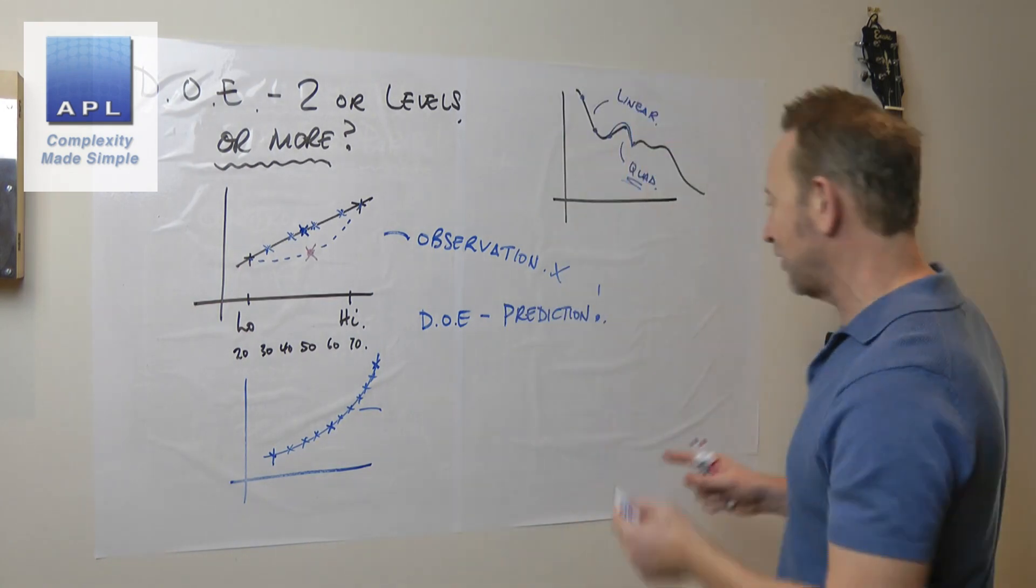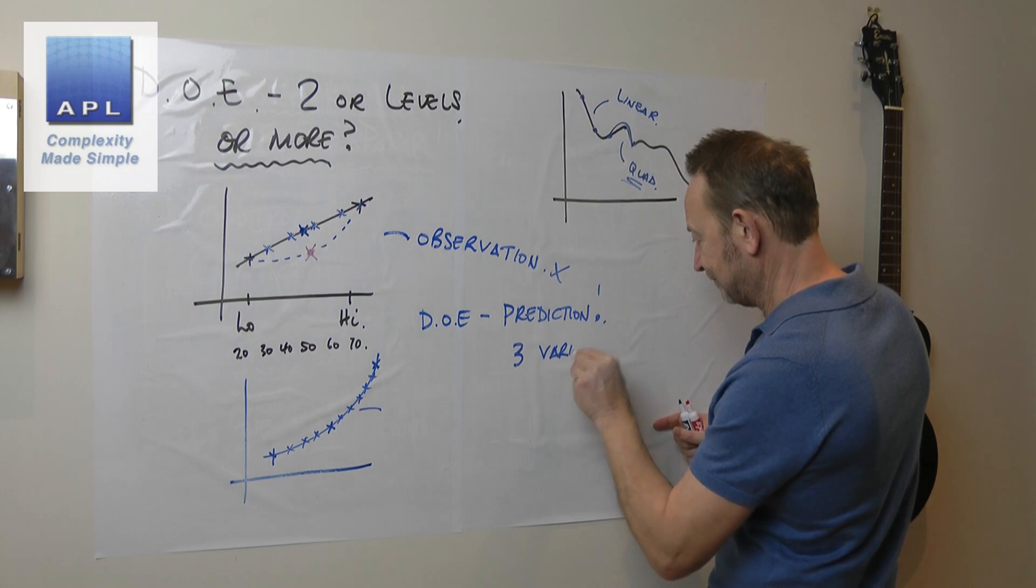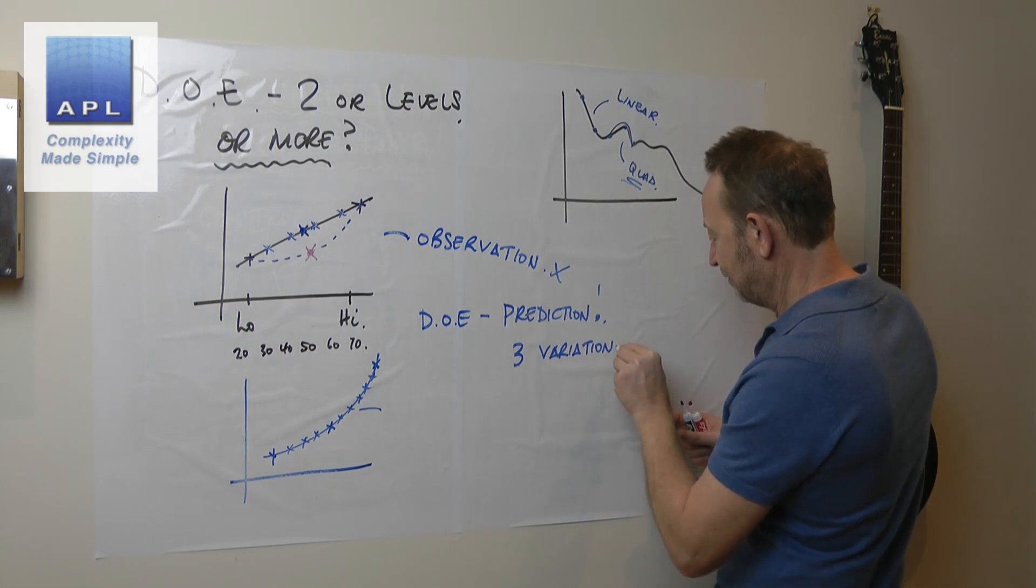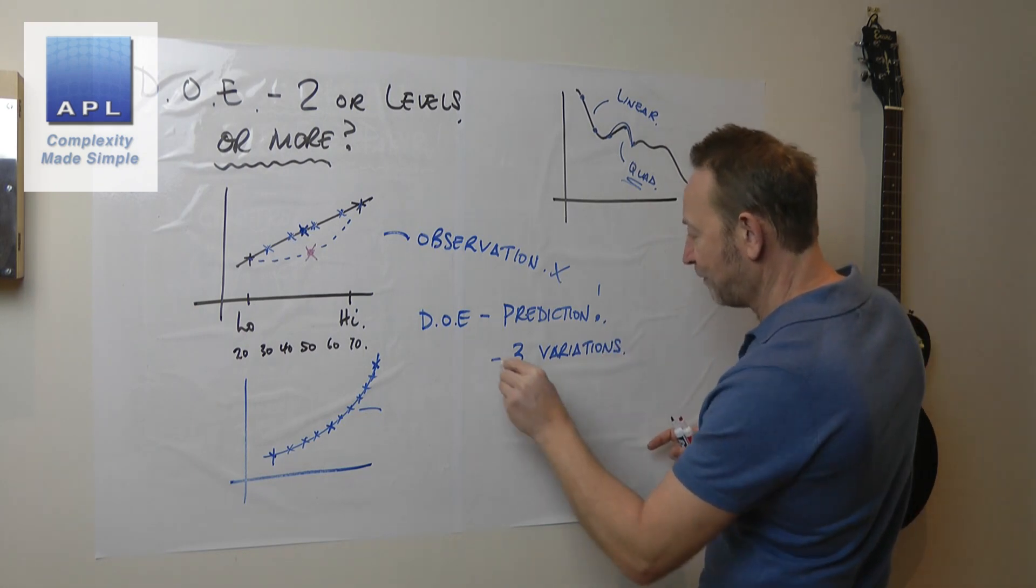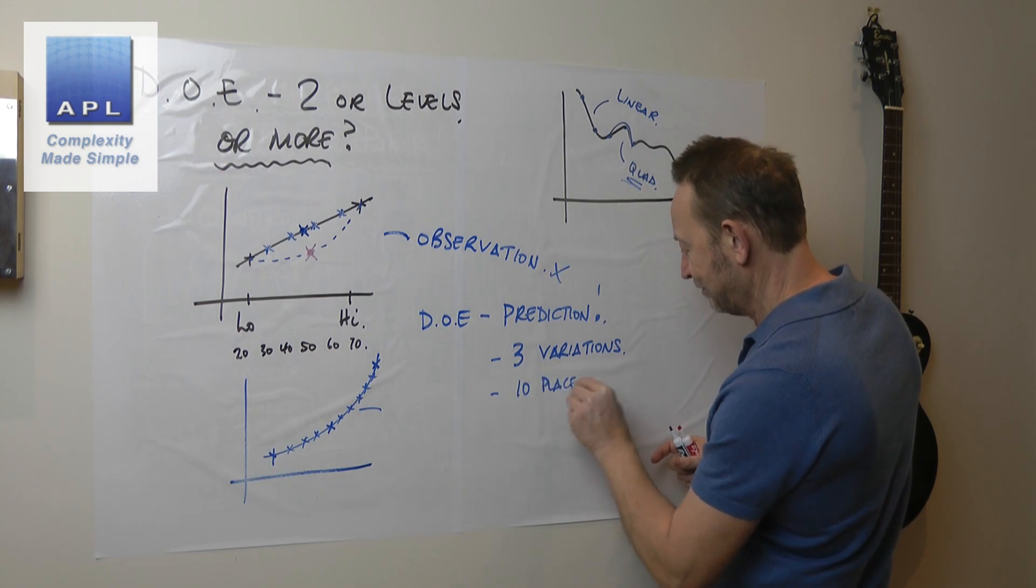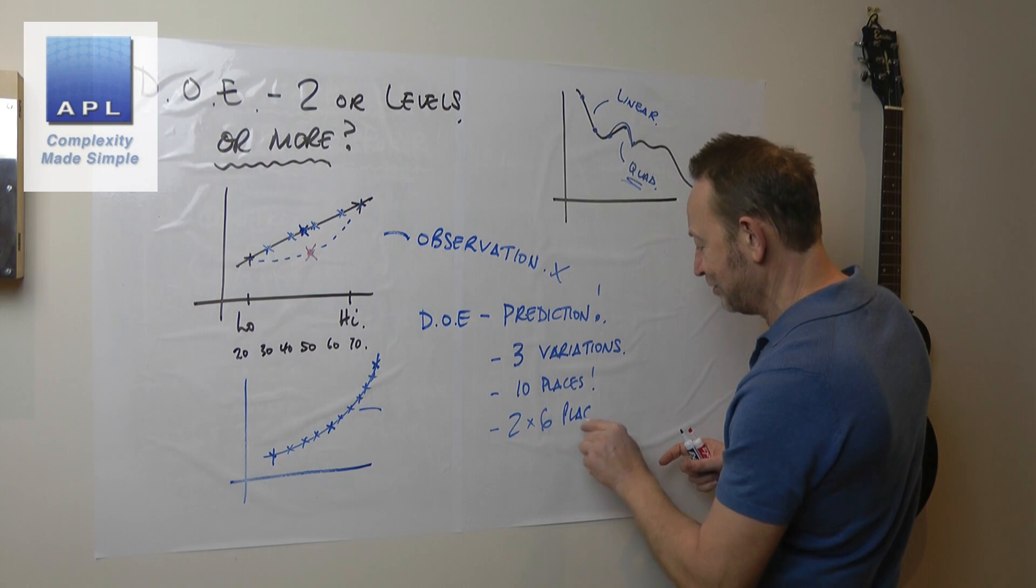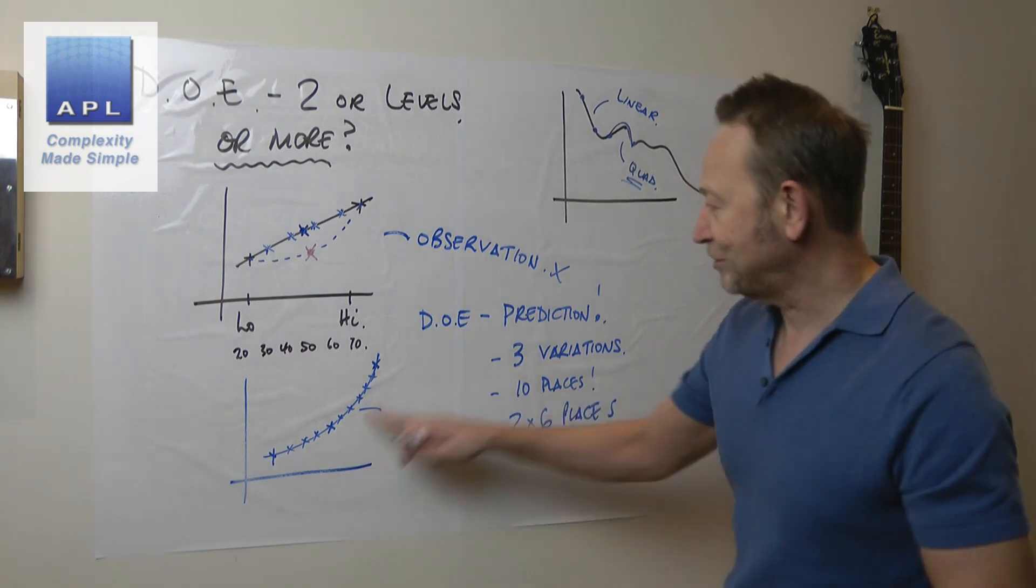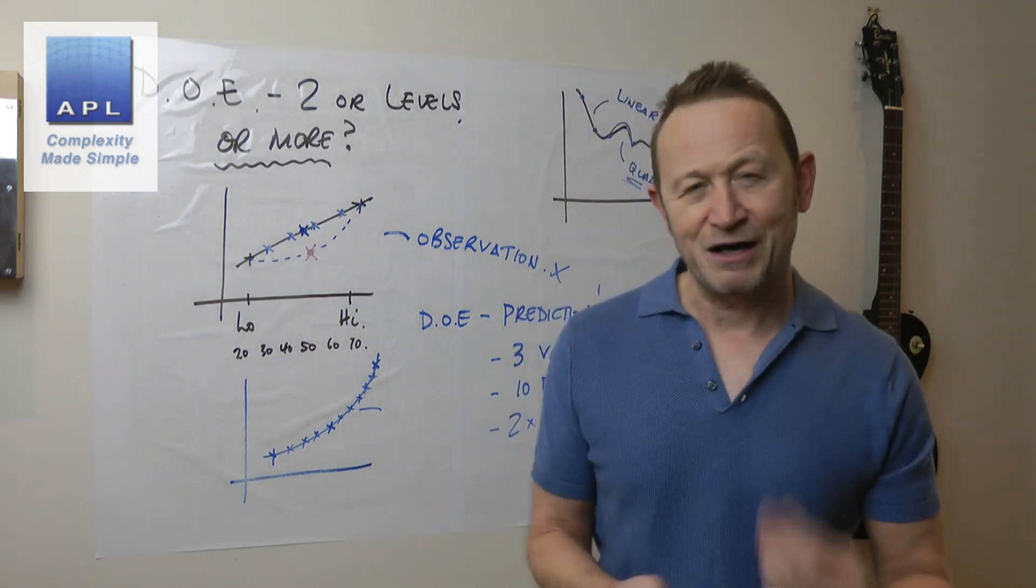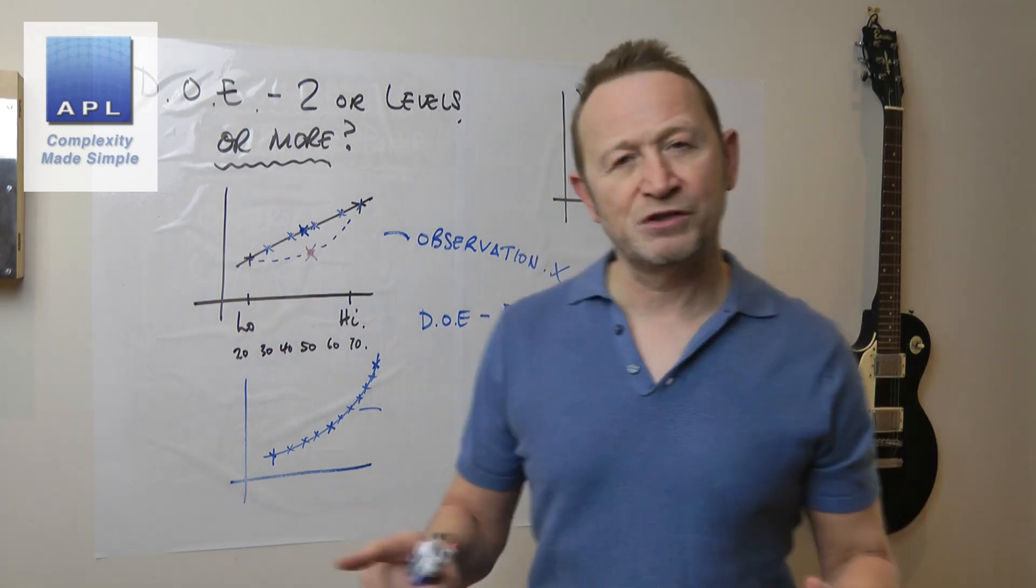The question I was sent, by the way, they had three variables, and what they wanted to do, they wanted to test one of them in 10 places and the other two they wanted to test in six places. So they wanted to do this. I don't understand that. Let the maths do the work.